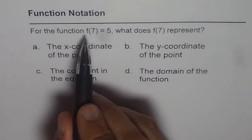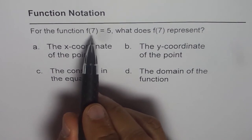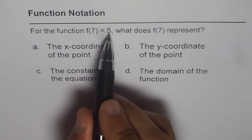Basically f(7) is like y, the y value, right? So it says at 7, the value is 5.